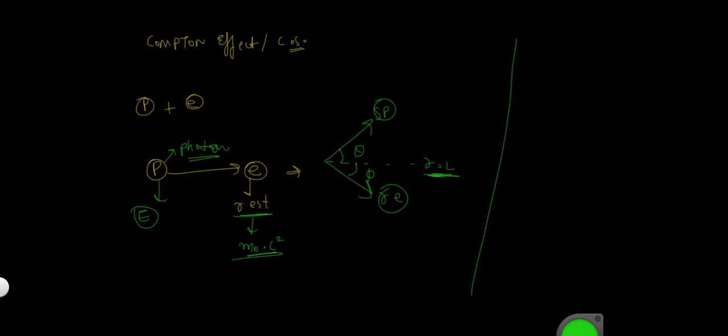What happens is that we calculate the shift in the wavelength delta lambda equals to lambda minus lambda dash. Now what is lambda? Lambda is the wavelength of incident photon, and lambda dash is the wavelength of scattered photon. So this is what we calculate.